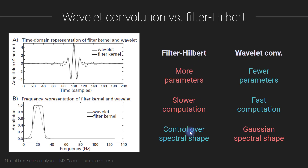The main circumstance where you might want to prefer filter-Hilbert over wavelet convolution is the feature of Morley wavelets that they are always Gaussians in the frequency domain — you have no control over the shape of the wavelet in the frequency domain. In contrast, with FIR filtering, you have control over the shape of the spectrum. Let me give you an example situation where that might be useful.